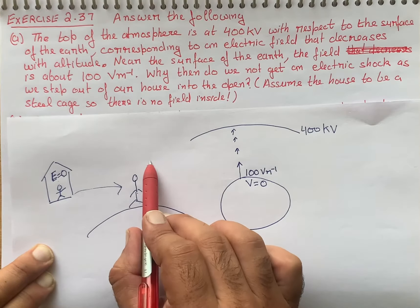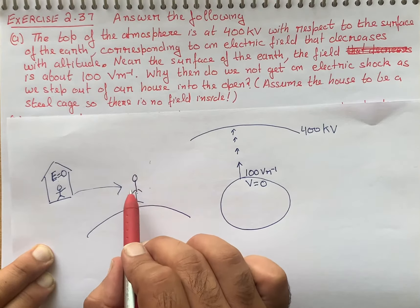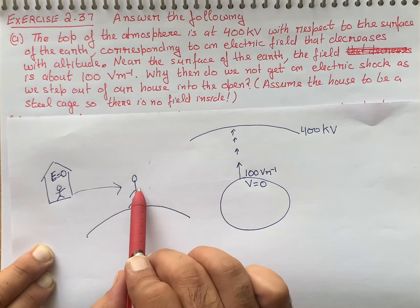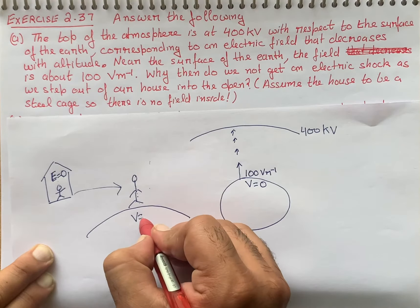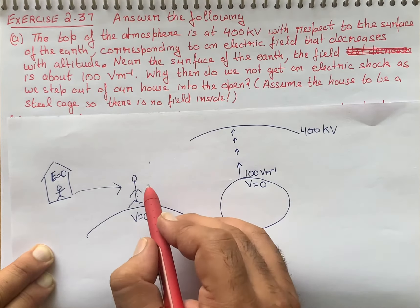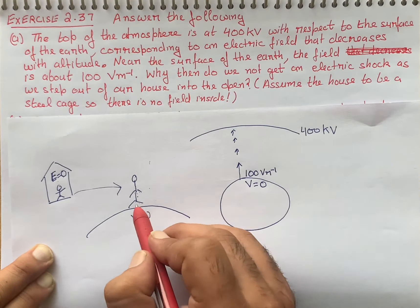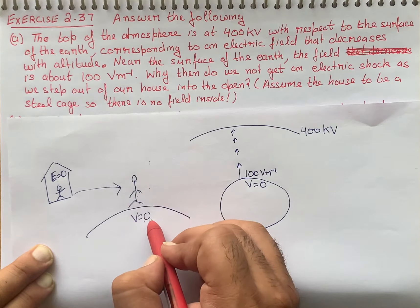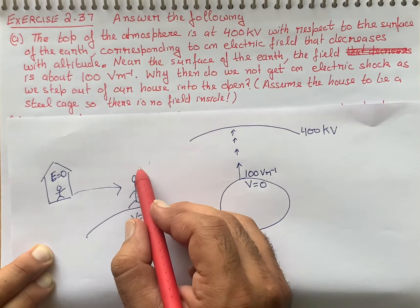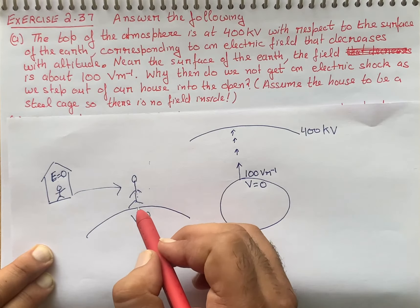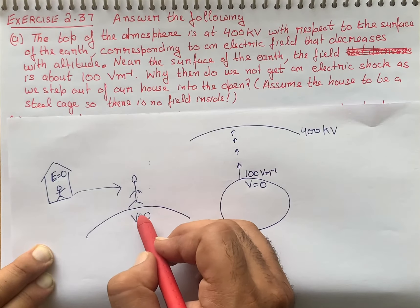Ab examiner ne humi kya puchha hai? Why then do we not get an electrical shock as we step out of our house into the open? Toh iska jawab — steel ka bana hua humara house hai, toh is mein humein electrical shock nahi lagta. Kyun? Kyunki inside a steel house, humein malum hai, electrical field kitni ho jayegi — zero. Is concept ko hum kehte hain electrostatic shielding. Inside a metallic conductor, electrical field zero. Electrical field zero ka matlab hai koi charge hi nahi hai, toh hume ghar mein agar charge hi nahi hai, toh humein koi bhi current nahi lagega.